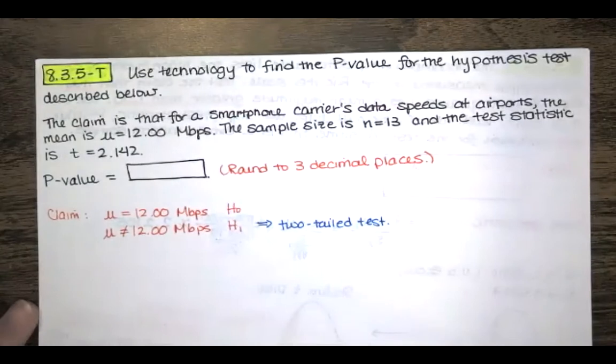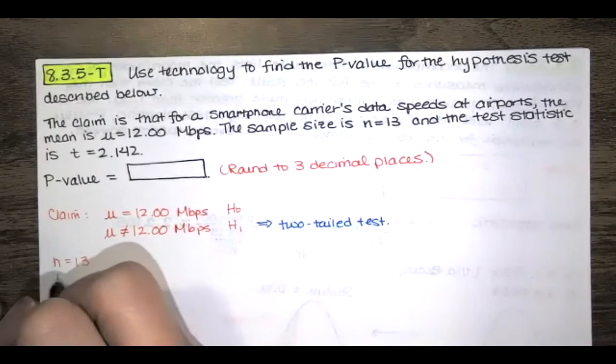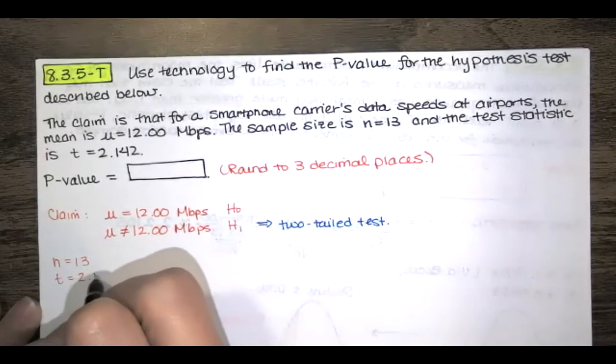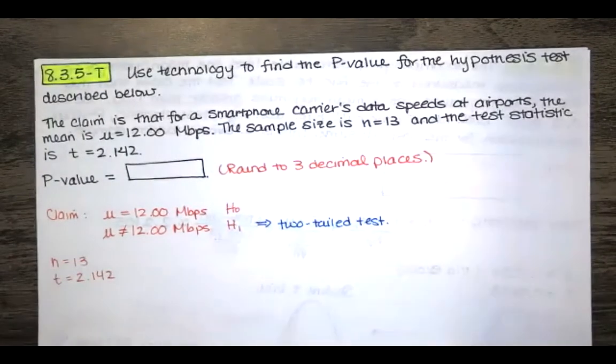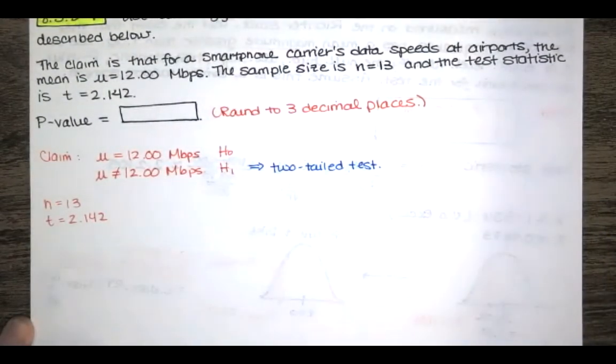And then what else are we given? We're given that the sample size is n equals 13 and our test statistic t equals 2.142. I'm not really sure that the sample size is relevant here.